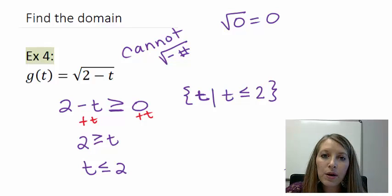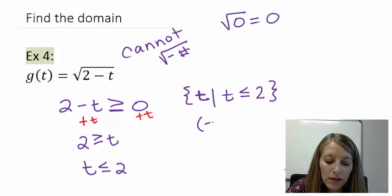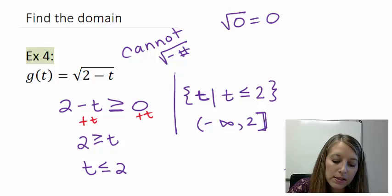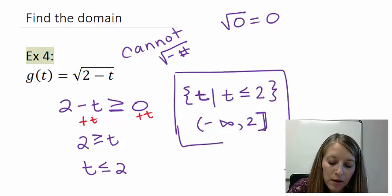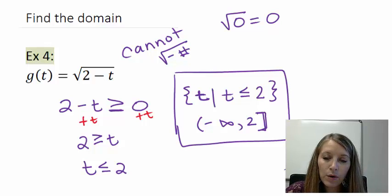If we wanted to put it in interval notation, we know that any number up until 2. So negative infinity up to 2 and including 2 because we have that or equal to bar.